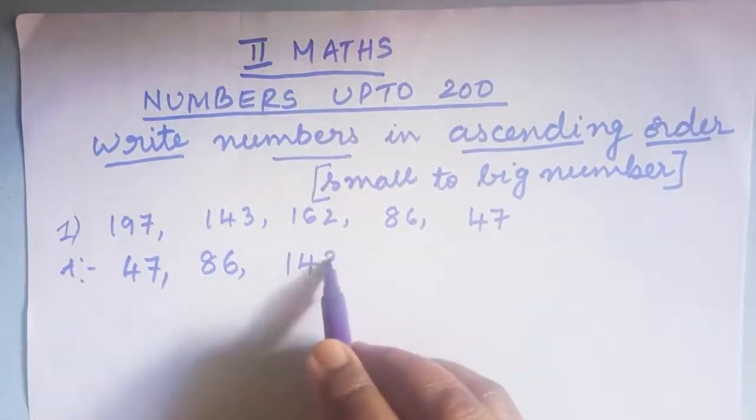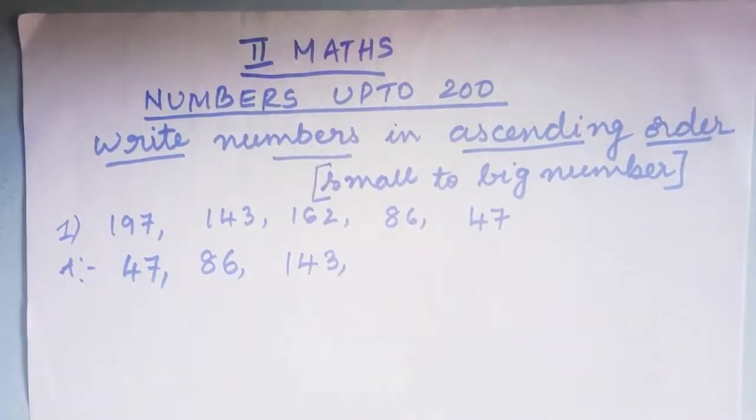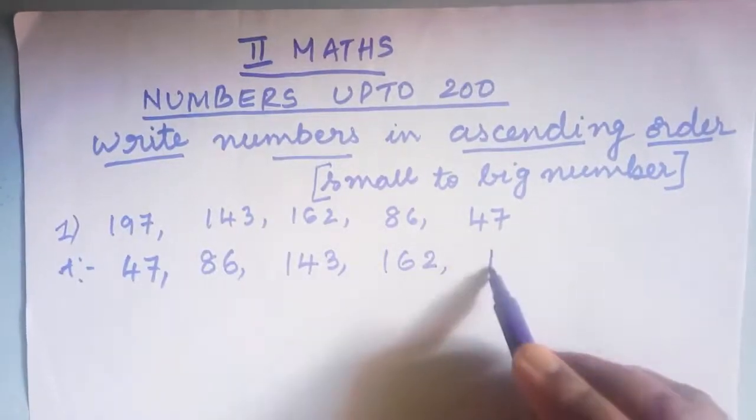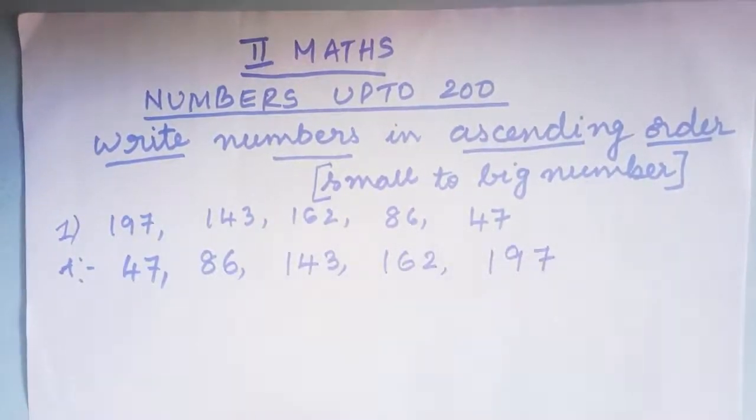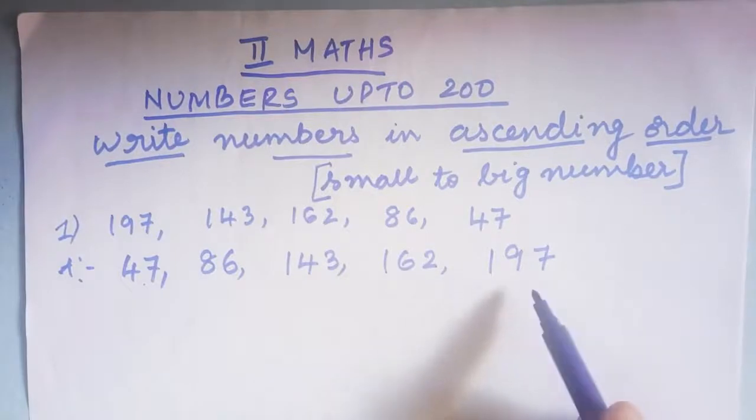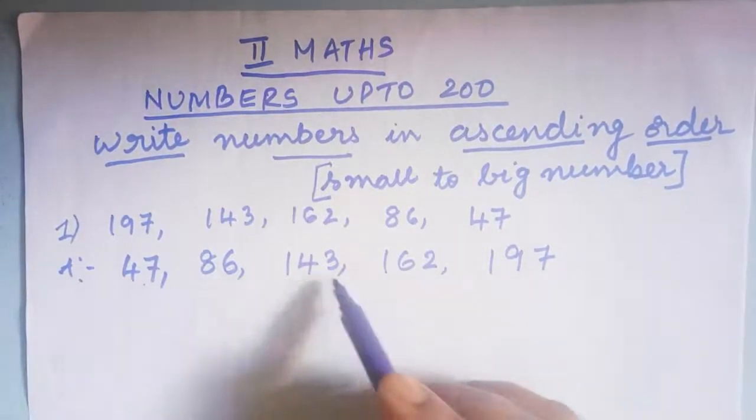After 143, I have 162, and the last number will be 197. From 47 to 197, we have arranged the numbers from the smallest to the largest one.